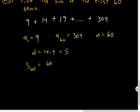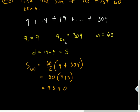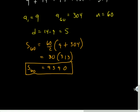So S sub 60 is, it would be 60 over 2 times 9 plus 304. So that's 30 times 313. So what is that going to be? That would be 9390. Bam. We just found the sum of 60 terms. And we didn't even know all of them. Pretty cool stuff. Well, but I wanted to find S sub 60. I should label my answer.